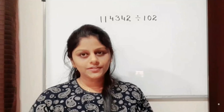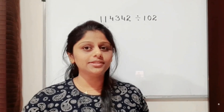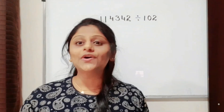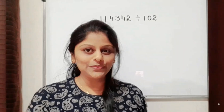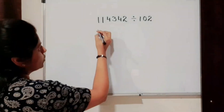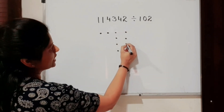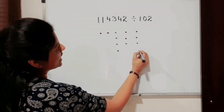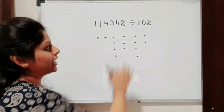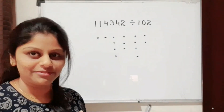Now the next question is somewhat different — I've taken a more complicated question. You can see that our divisor has a zero. So if we have a zero in the divisor, we will see what to do in this question. Let's first start drawing the dots for the dividend 11432: one dot, one dot, four dots, three dots, four dots, and two dots.